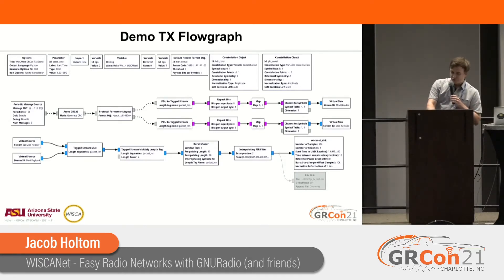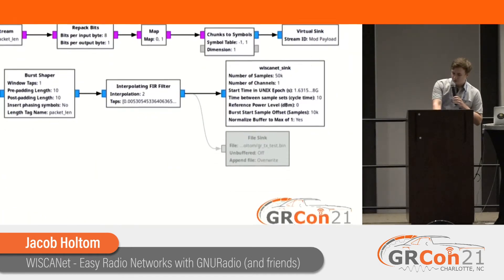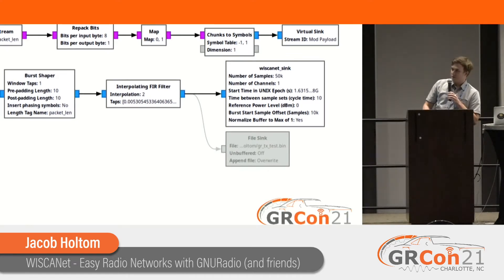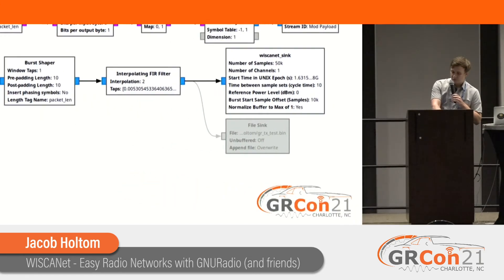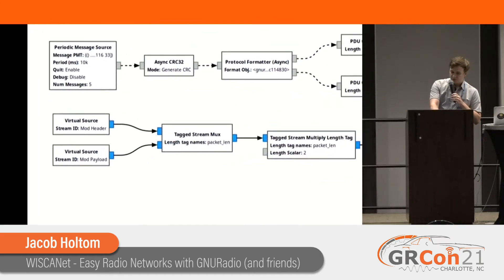This one should also look super familiar in structure — it's just the BPSK demo flow graph from gnuradio.org, just with our little Wiscanet sink swapped in at the end instead of a UHD sink or a SOAPY sink. It has the same parameters where we get our start time from the command line, have some delay between sample sets and some other parameters, but otherwise it looks basically the same.